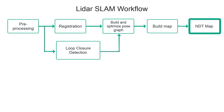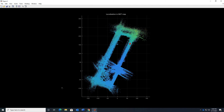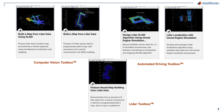Now, how do you do localization? Localization is a process where, given a point cloud and a point cloud map, you estimate the pose of the vehicle or the object. You can also take the aid of other sensors like IMU or GPS to improve the accuracy of pose estimation. You saw how you can build a point cloud map using graph SLAM technique and localize a vehicle in this map.